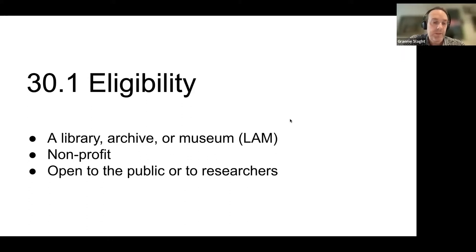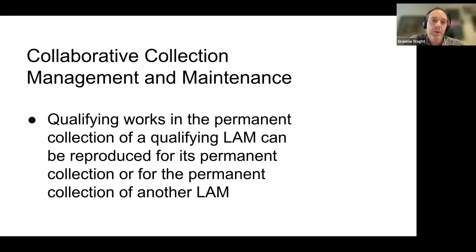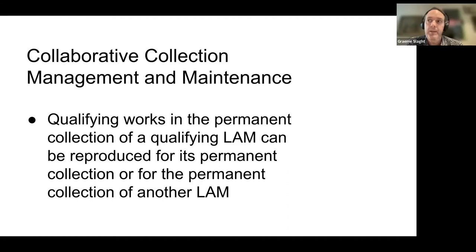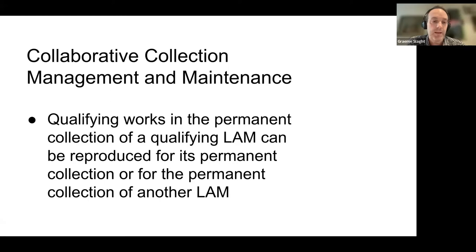Written right into the beginning of Section 30.1 is the possibility for collaborative collection management and maintenance. Eligible LAMs can make copies of eligible works for their own collection or for the permanent collection of other libraries. This is potentially very useful for software and software-related file dependency issues — for example, if a LAM needs a specific version of software held by another library to view a work in its collection, these two qualifying LAMs could share access to that piece of software.